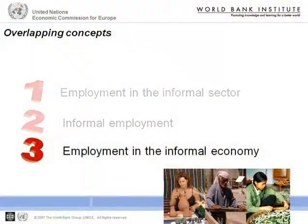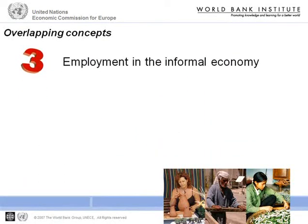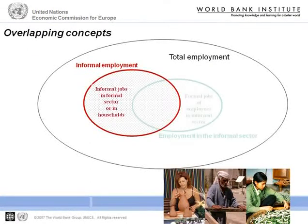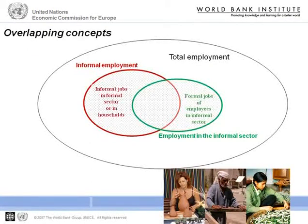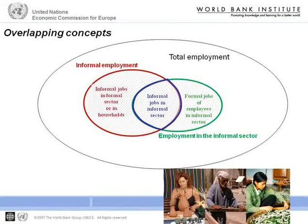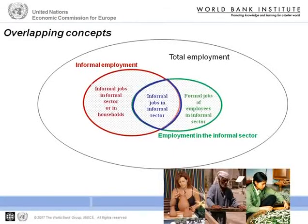This diagram shows how informal employment and employment in the informal sector can relate to each other. The red oval corresponds to informal employment. The green oval corresponds to employment in the informal sector. There is an overlap between the two, but there can be informal jobs outside the informal sector, as well as formal jobs within the informal sector. Some users of statistics may also use the notion of employment in the informal economy, which corresponds to the total dotted area.